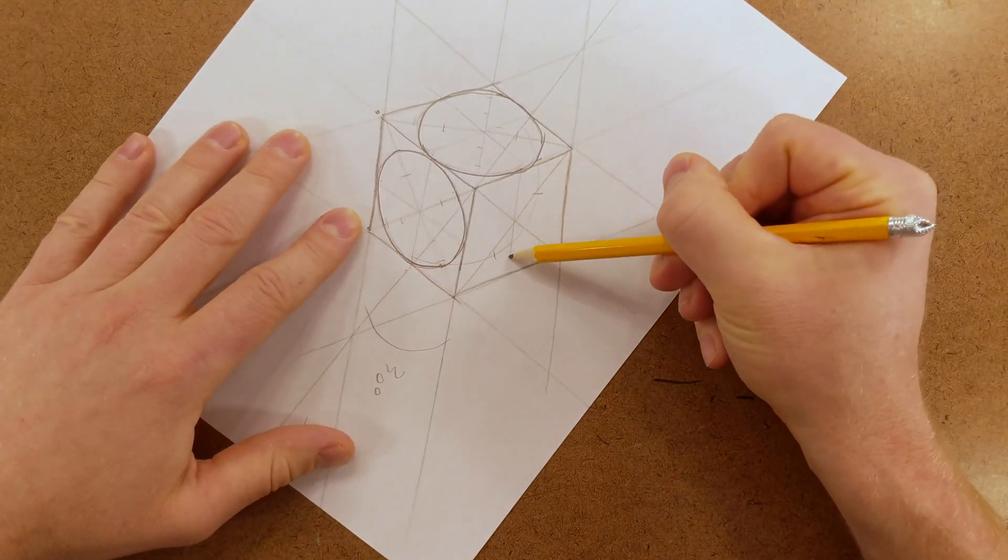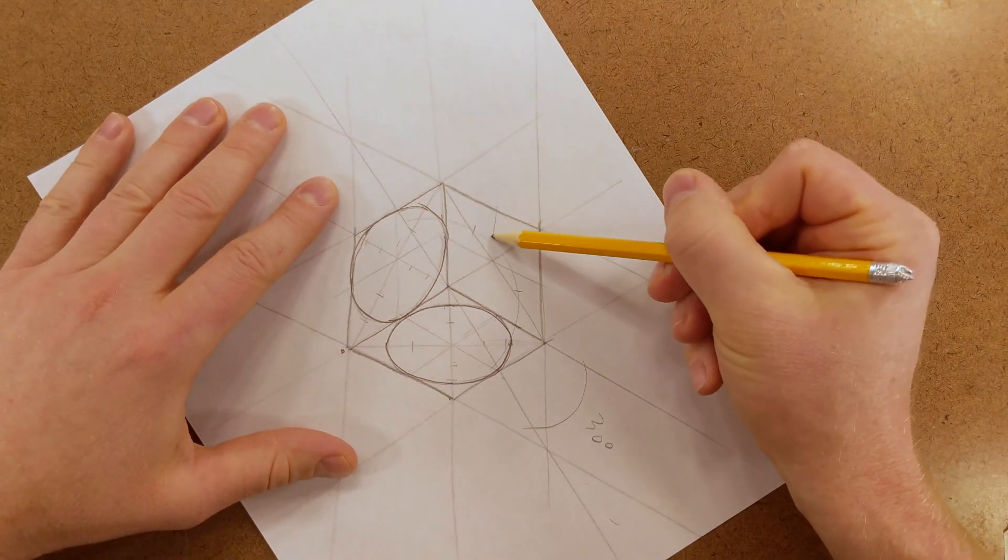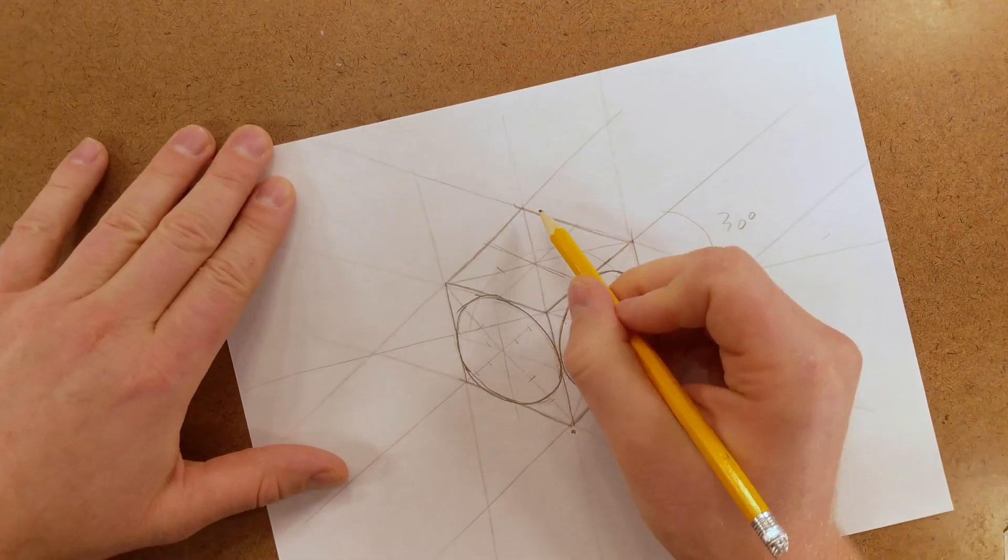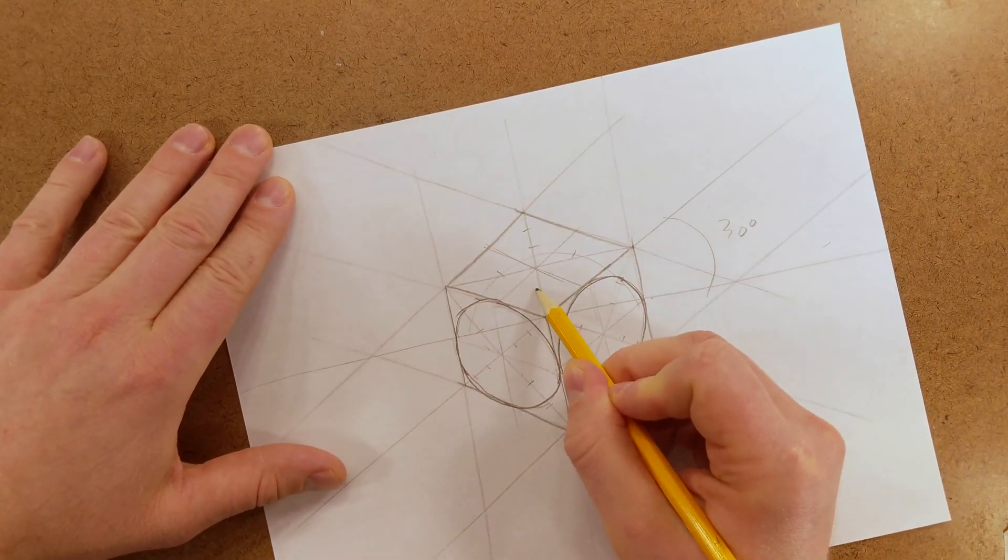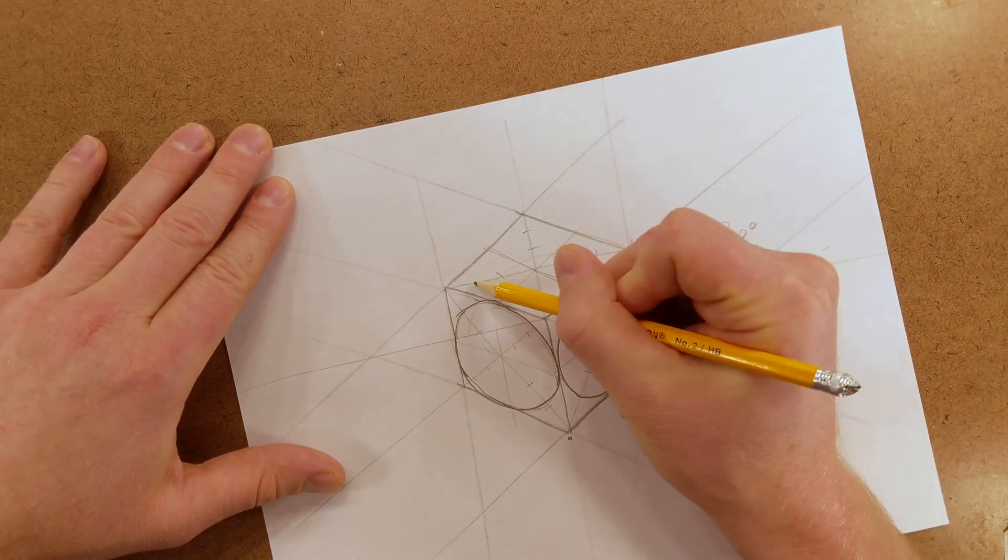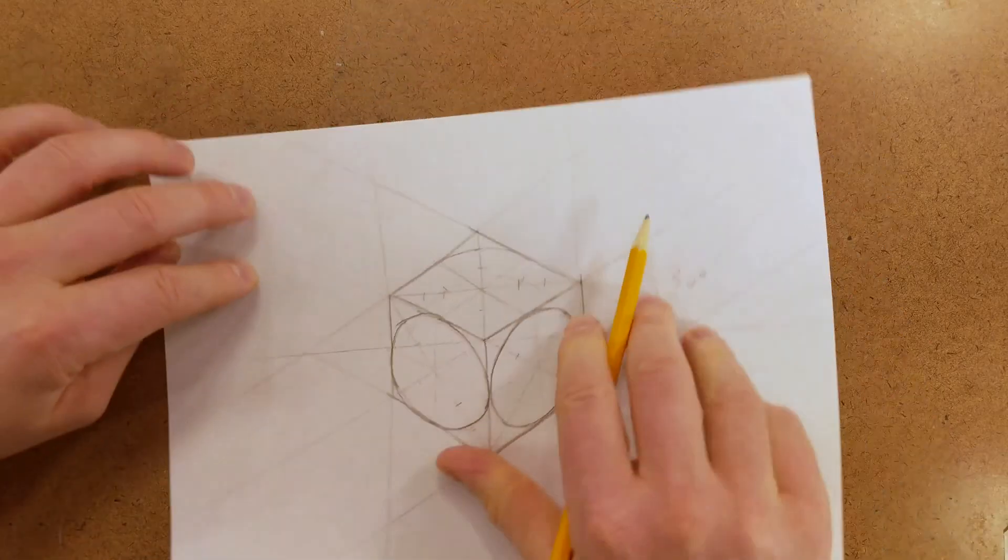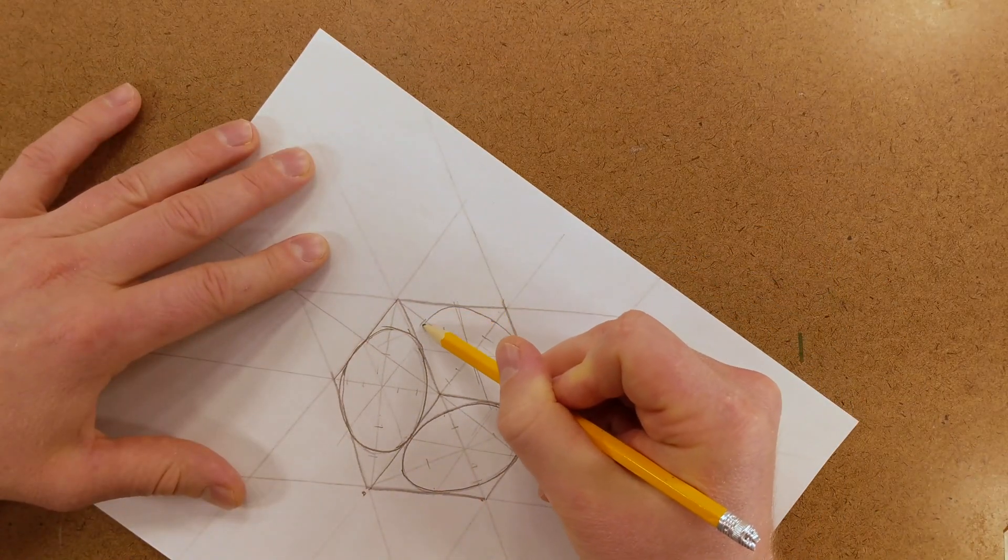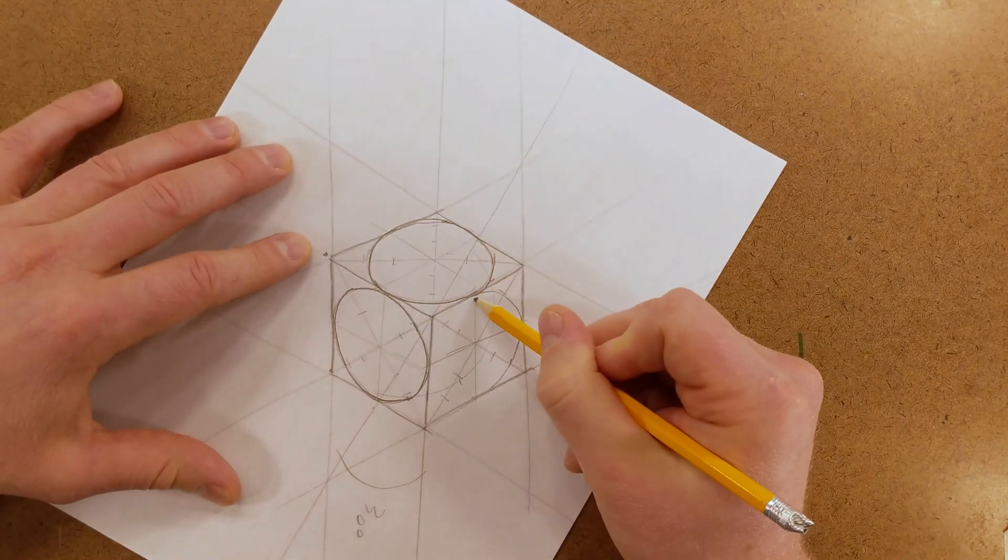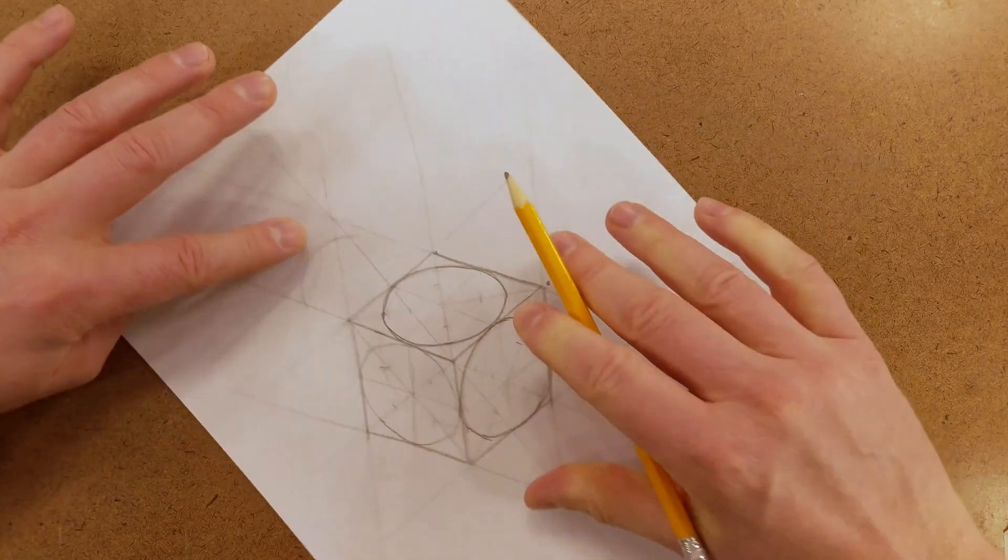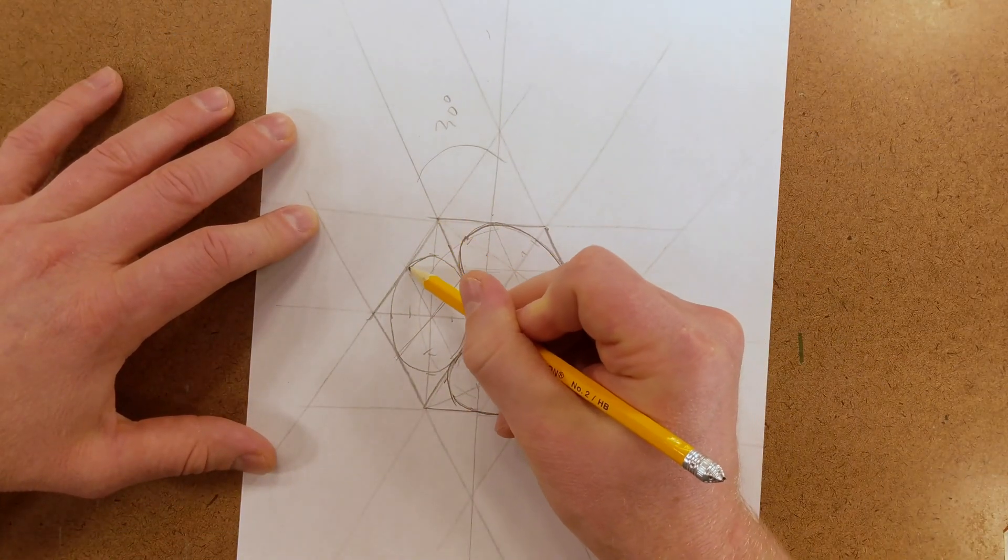Draw your diagonals, then draw your vertical. Draw your tick marks on your diagonals, and then draw your tangent curves. Then connect and smooth out your line.